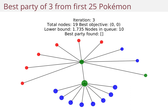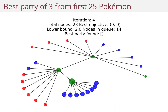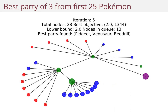Keep going. And here we find a party. So from the root node which had zero Pokemon, we added one Pokemon, two Pokemon, three Pokemon — we examine this node and found the best party so far. But we're not finished.